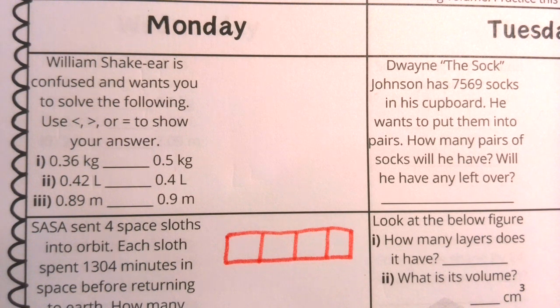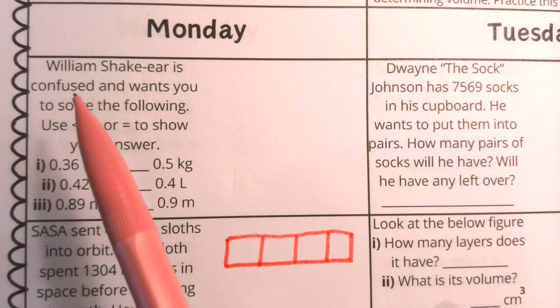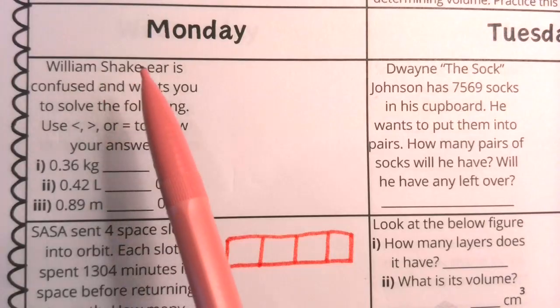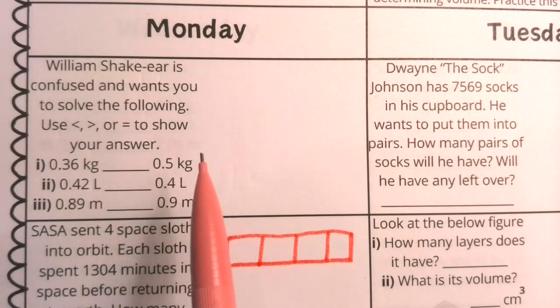Good morning, math physicians. This is week three. We're looking at Monday, and we're going to be comparing some decimal values here. This says William Shake-ear is confused and wants you to solve the following. You're going to use a comparison symbol to show your answer.